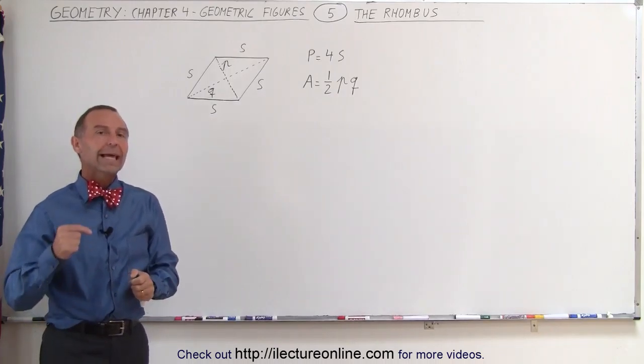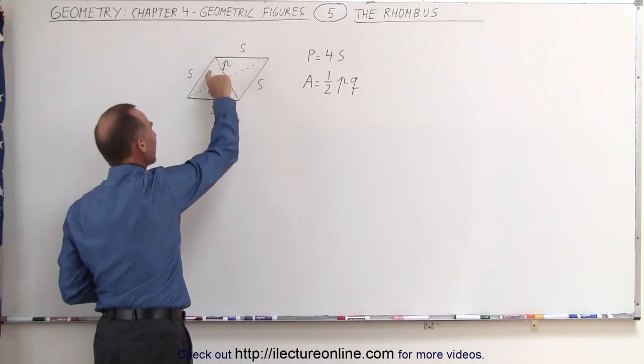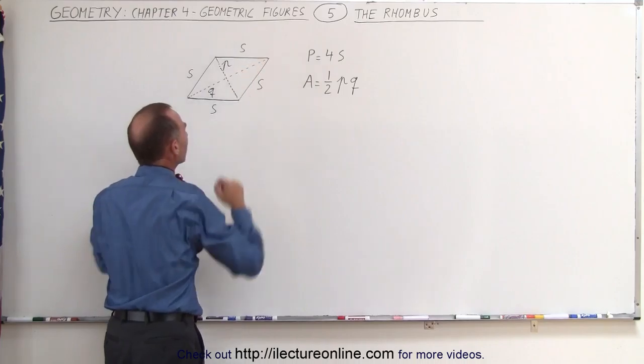If we then draw the diagonals from this corner to that corner, let's call that diagonal P and the other diagonal Q. Notice that this is a shorter diagonal and this is a longer diagonal.